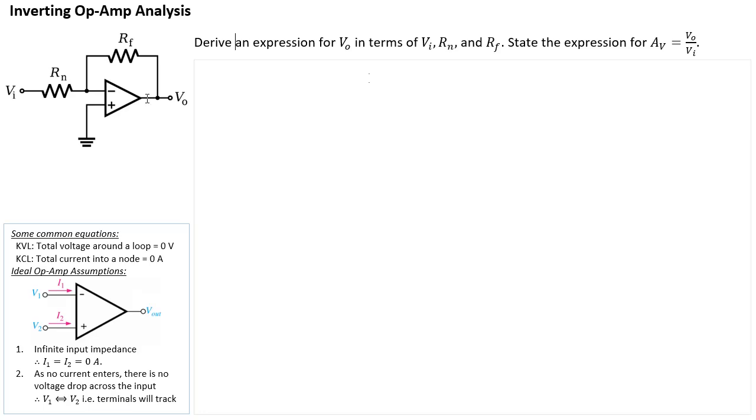So Vi and Rf, that's these guys over there. And when we've done that, we should be able to state an expression for AV, which is another typical term we use for gain, voltage gain, where it's basically output voltage divided by input voltage.